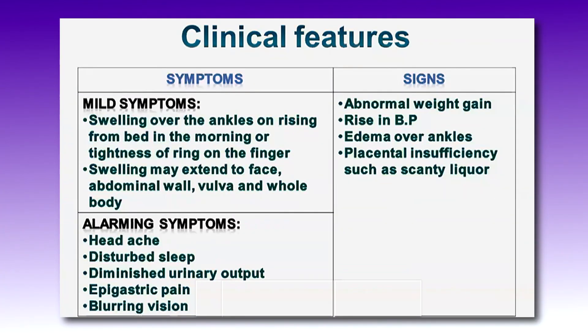Here I will explain the signs and symptoms of preeclampsia. The signs include: abnormal weight gain, rise in BP, edema over the ankles, and placental insufficiency such as scanty liquor. Symptoms can be categorized into mild and alarming. Mild symptoms include swelling over the ankle — usually occurring in the early morning when the mother gets up from bed — tightness of the ring on the finger, and swelling may extend to the face, abdominal wall, and vulva.